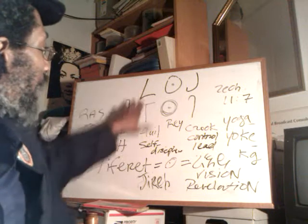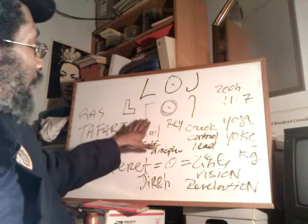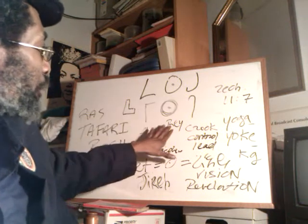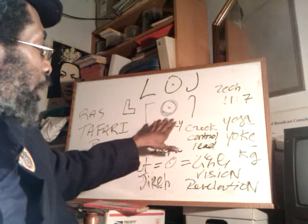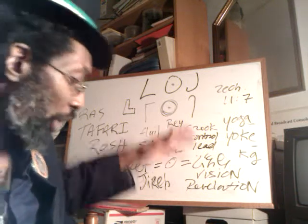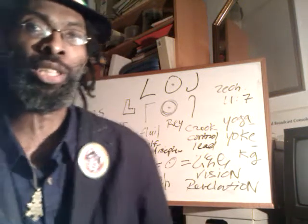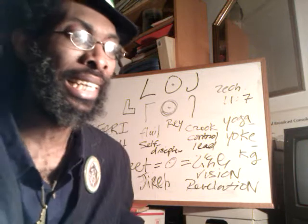Now we have the L, which stands for the flail, and the O, which stands for Rei — what some would call the ancient Egyptian sun god.